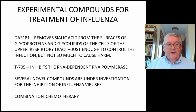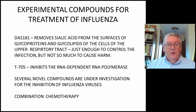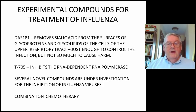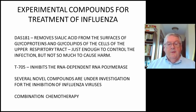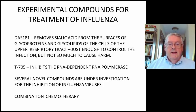In addition to those licensed antiviral drugs, there are a number of experimental compounds for the treatment of influenza. One is called DAS-181, which removes sialic acid from the surfaces of glycoproteins and glycolipids of the cells of the upper respiratory tract, just enough to control the infection but not so much to cause harm. Another newly developed antiviral is T705, which inhibits the RNA-dependent RNA polymerase. Combination chemotherapy — using more than one drug at the same time, such as amantadine plus neuraminidase inhibitors — is also an active field of research.